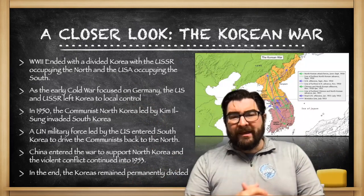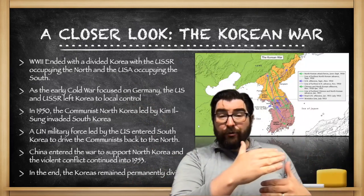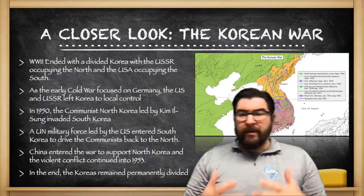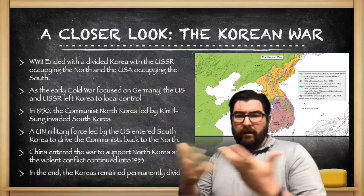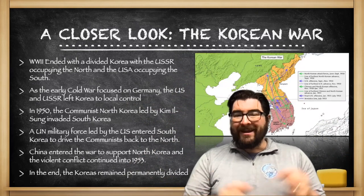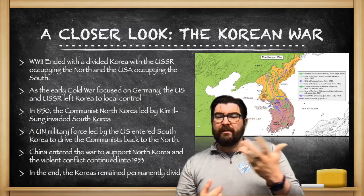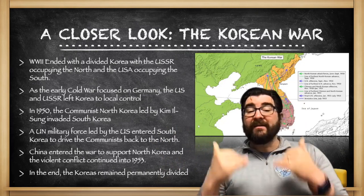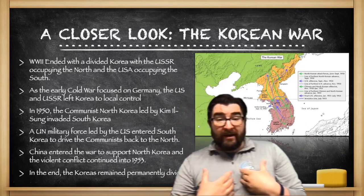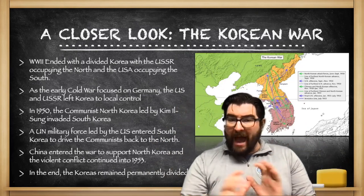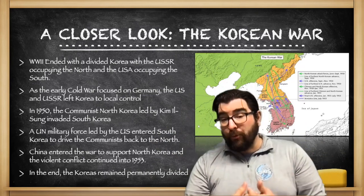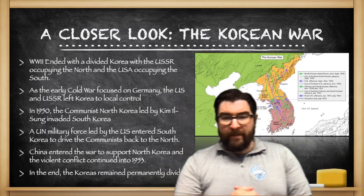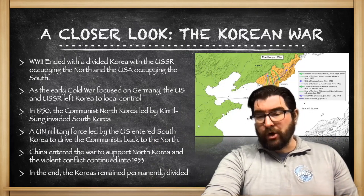The Korean War: after World War II ended with a divided Korea, the Soviet Union occupied the northern portion and the United States occupied the south. The early Cold War focus on Germany led the Americans and Soviets to leave Korea to local control. In 1950, communist North Korea, led by Kim Il-sung — the grandfather of today's leader — invaded South Korea. A United Nations military force led by the United States entered to drive the communists back north, but then China entered the war to support the North Koreans. This violent conflict continued until 1953, and in the end the Koreas remained permanently divided.